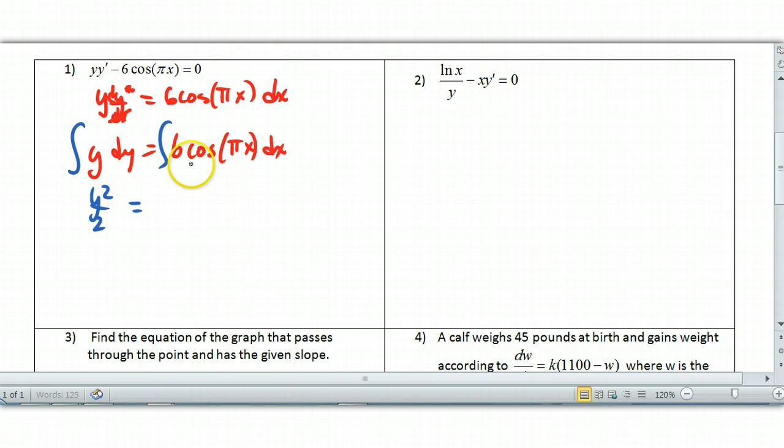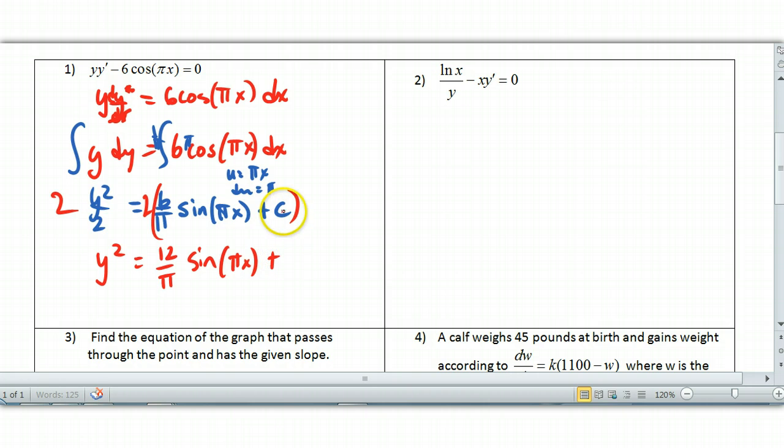Then I can integrate both sides. This is y squared over 2 is equal to—now we have to do a little u substitution, and du is equal to π. I need that π in there. So I get 1 over π. Then the 6 will go along too, 6 over π. The anti-derivative of the cosine is the sine of π x plus c. We could change this by multiplying both sides by 2, so we get y squared is equal to 12 over π sine of π x plus 2c. That's still a constant, so I'll call it c1. Either way, in the blue here or in the red, would work. That's your general solution.